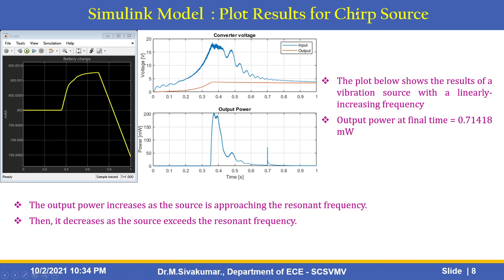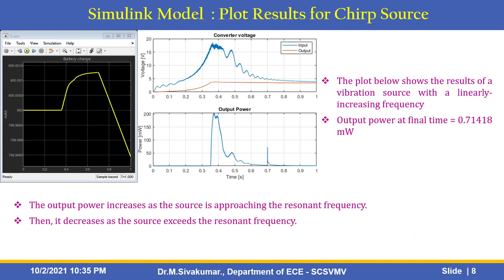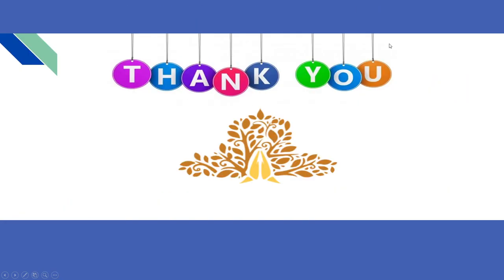The second option uses a chirp source, where you can set the vibration source to either sine wave or chirp. The plot shows the result of a vibration source with a linearly increasing frequency. The output power at final time is 0.71418 milliwatts. The output power increases as the source approaches the resonant frequency, then decreases as the source exceeds the resonant frequency. In summary, the chirp source gives 0.71418 milliwatts and the sinusoidal source gives 68.6304 milliwatts.